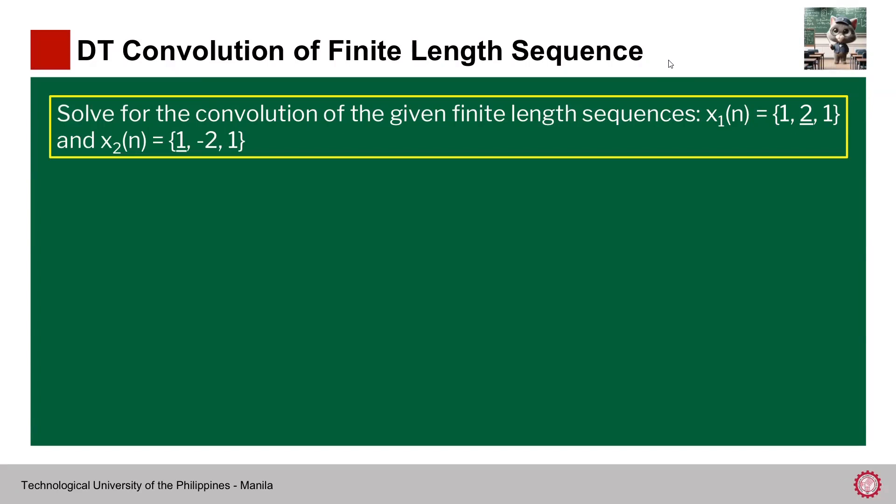Discrete time convolution for the finite length sequence. The easiest way of solving problems with regard to finite length sequence is to use the sum by column method. The first thing that you need to do is to write the given finite length sequence vertically and horizontally.